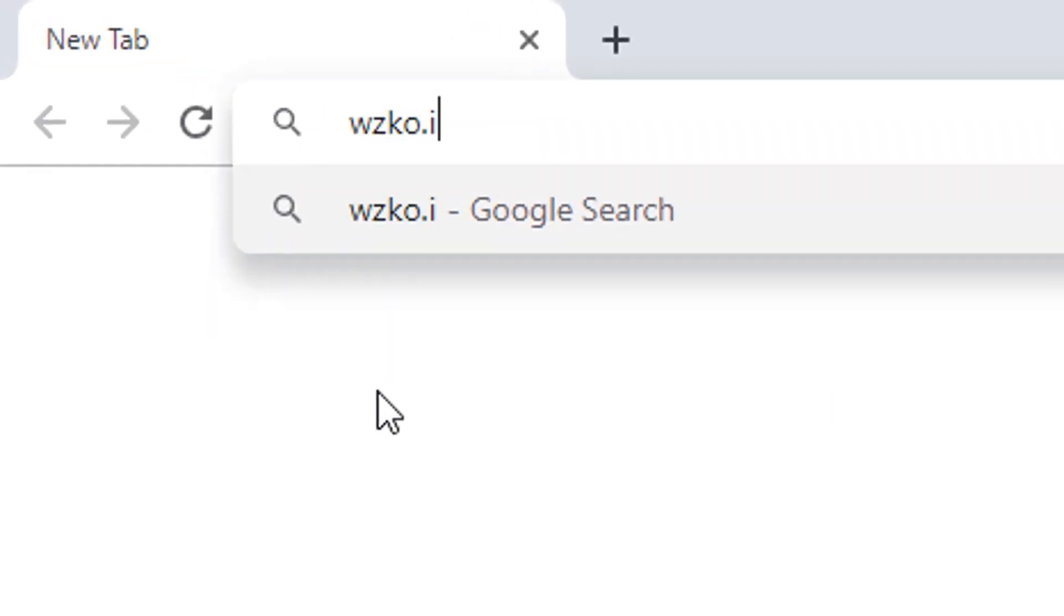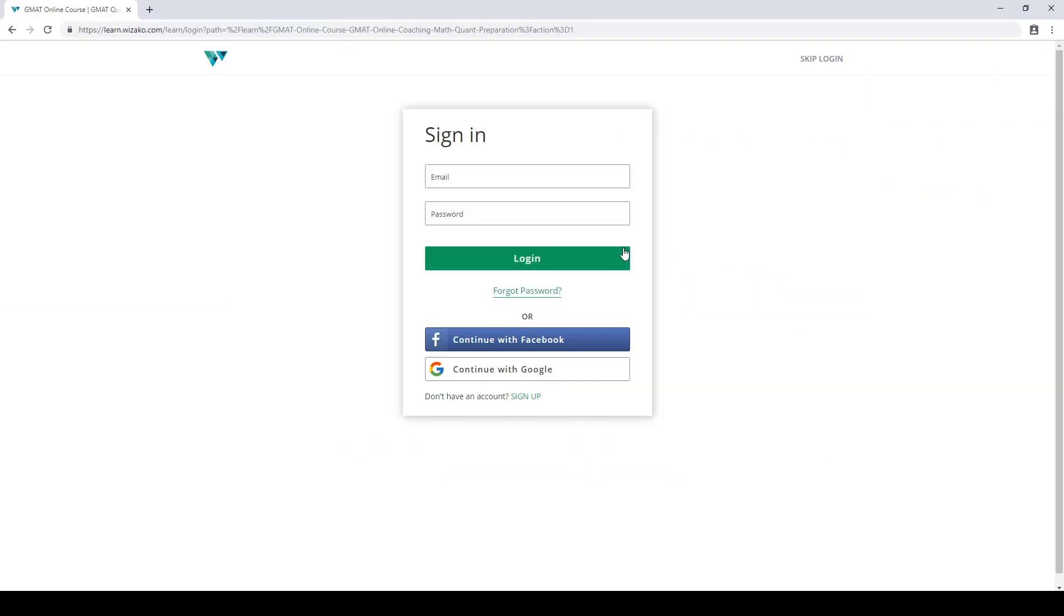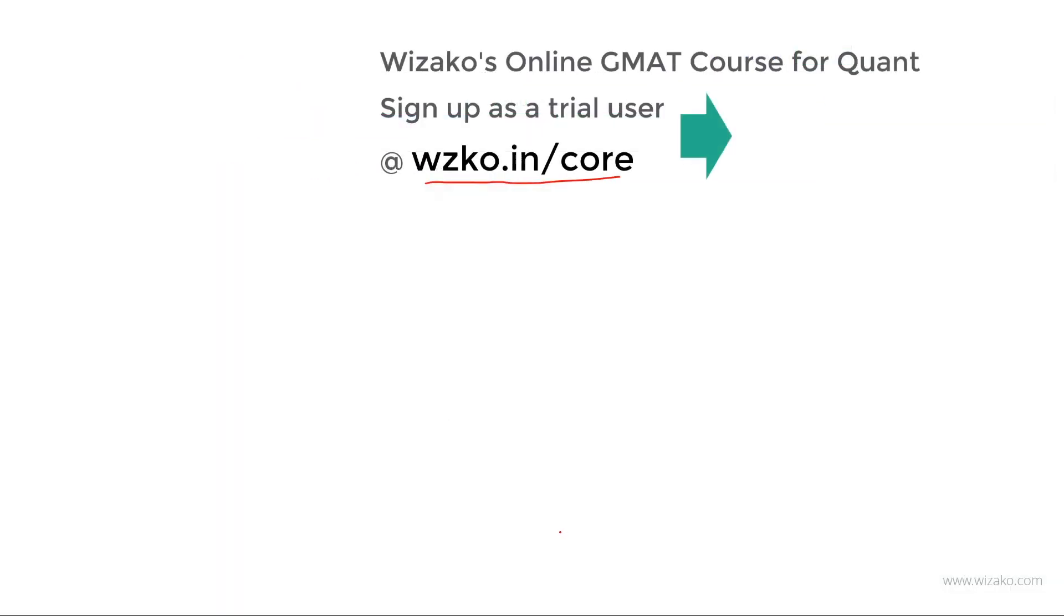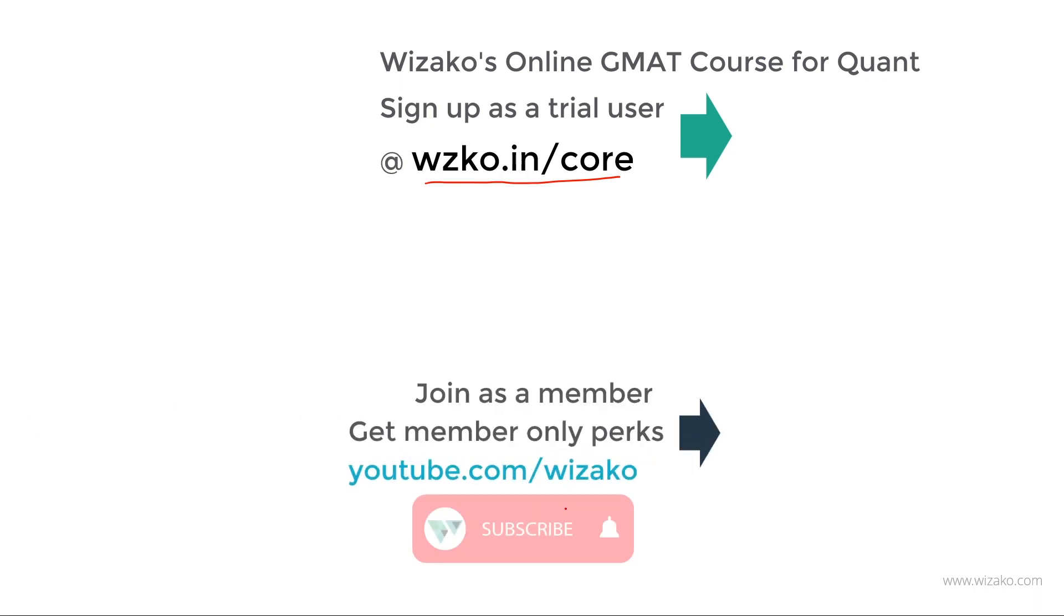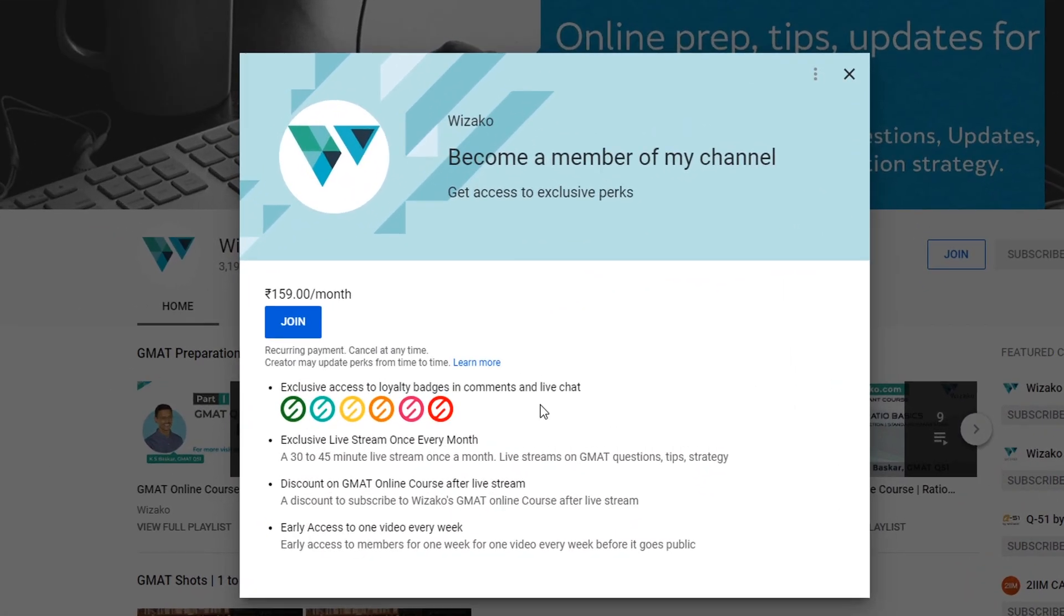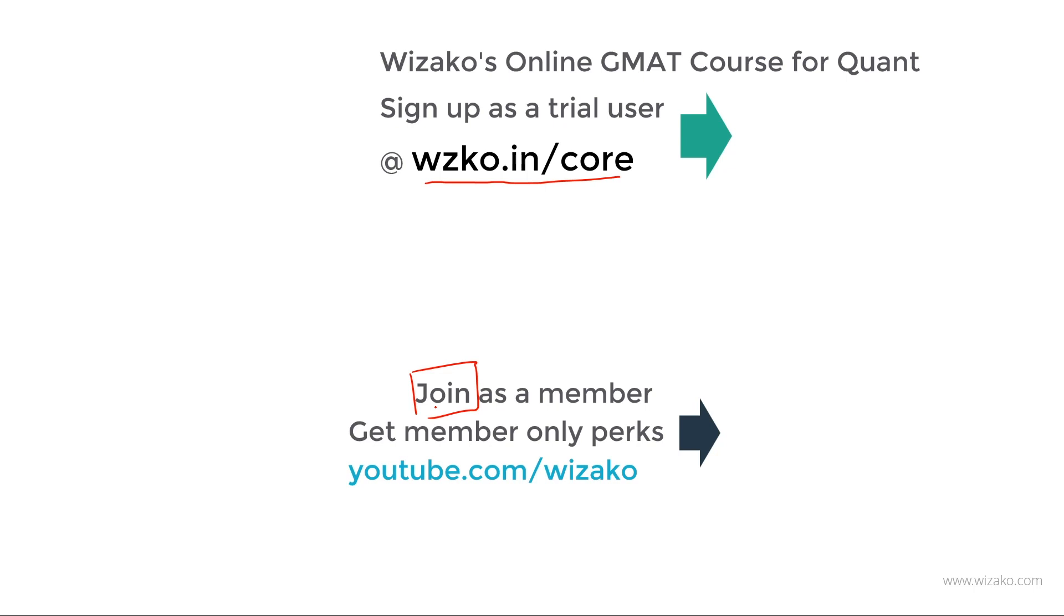Before you leave, do three things. One, sign up as a trial user at wzko.in/core. Start with statistics and averages. It's a free topic. It will take you about 3-4 days to complete the topic. Build momentum to your GMAT preparation. Then convert it into a paid user and unlock the remaining topics and complete your GMAT quant in probably a month and a half. Two other things I would like you to do. One, subscribe to this channel youtube.com/wizako and turn on the notifications. So every time we upload a video, you get notified of it. Lastly, there's one more thing that you can do. You need not just subscribe. You can join as a member of this channel. It's a little different from subscribing to the channel. If you join as a member, you'll have to pay a small monthly fee. And for that, you get some member-only perks. Click on the join button on the home page of the channel or beneath any video. You'll have a listing of what member-only perks are available. These perks would help give you a boost to your GMAT preparation. Best wishes for a GMAT prep.